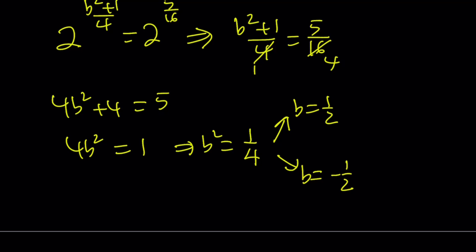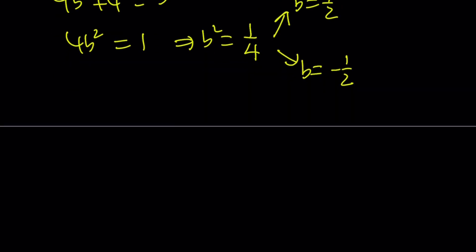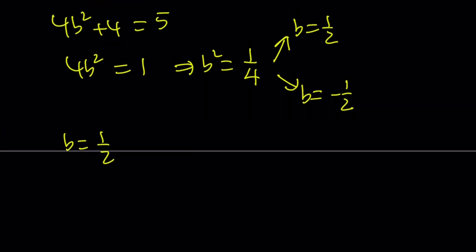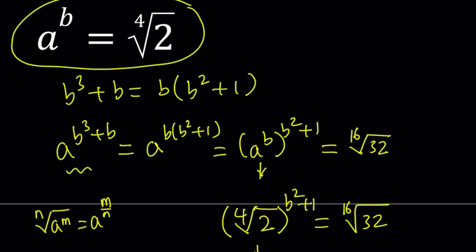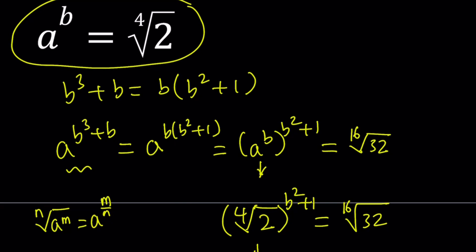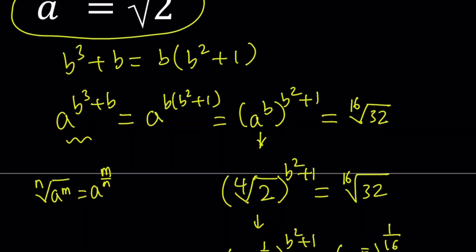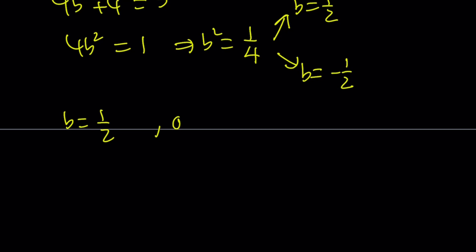Okay. So that's the value of b. Let's go ahead and find a using these values. If b is equal to 1 half, what's the relationship between a and b? So we have to use one of these equations, right? How about using the second one? Because it's a little easier. So we know that a to the power b is equal to the fourth root of 2, or we can write it as 2 to the power 1 fourth. It doesn't matter, whichever one is easier. Let's see. So now b is 1 half. So we have a to the power 1 half is equal to 2 to the power 1 fourth.